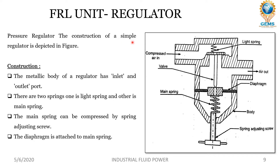Now let's see about the regulator — the pressure regulator. The construction of a simple regulator is depicted in the figure. The metallic body of a regulator has inlet and outlet ports. There are two springs: one is a light spring and the other is the main spring. The main spring can be compressed by the spring adjusting screw. The diaphragm is attached to the main spring.